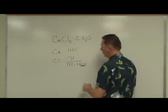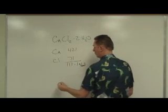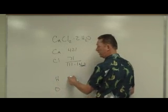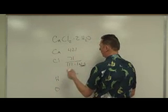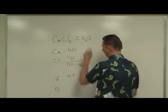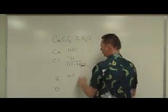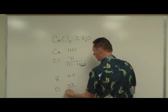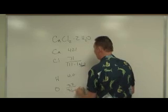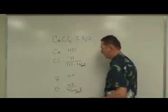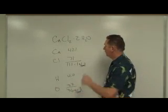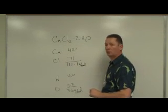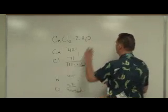Now let's look at the water. I've got two water molecules, so as far as the hydrogen goes, I've got four hydrogen each at one, so four times one equals 4.0 is the contribution of hydrogen. I've got two oxygen each at 16, a total of 32. So I end up with 36 grams per mole contributed from the water.